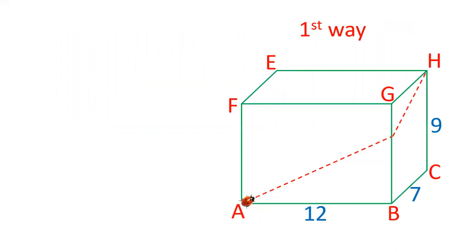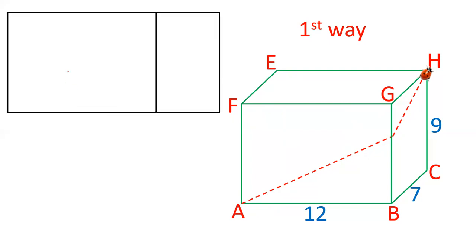This is the first way by which it can reach H. Possibly the shortest, may not be the shortest one. Let's see how it moves. It will move along this line and then it will move up to H. This is the shortest. Let's see what is this distance. Basically this is the front face.